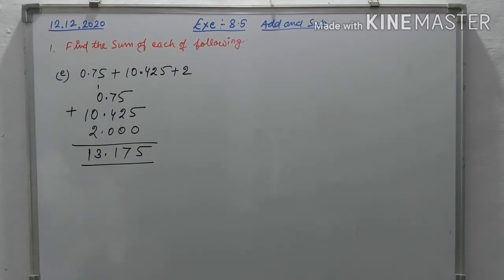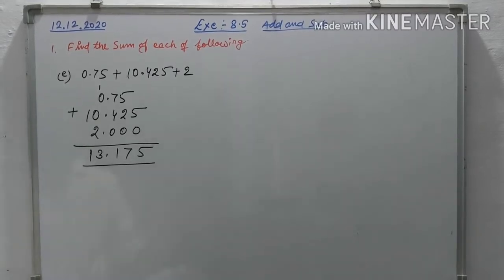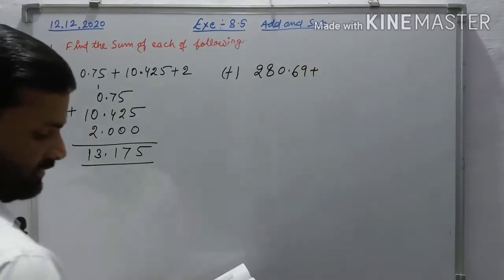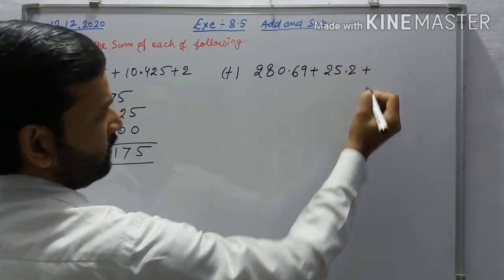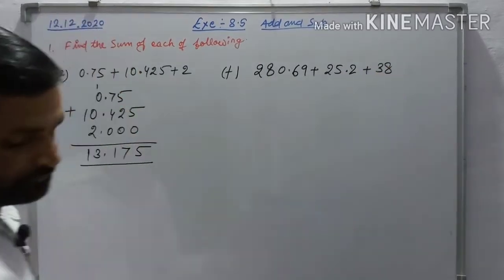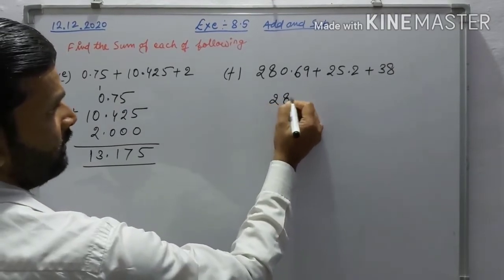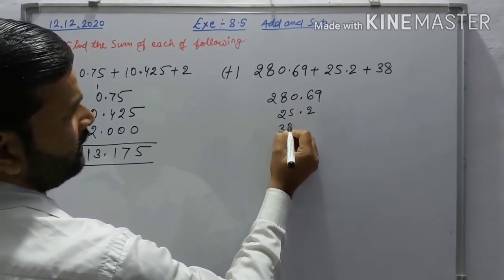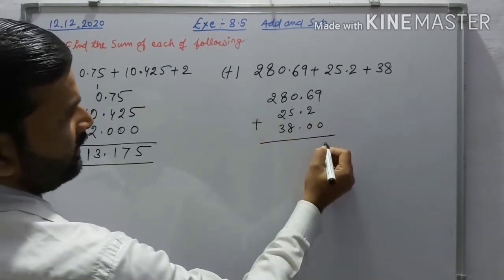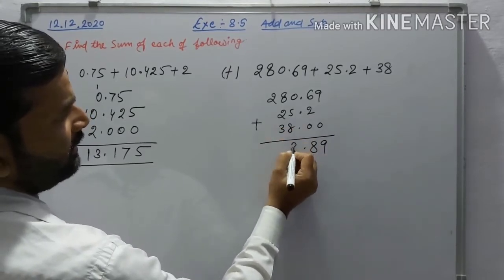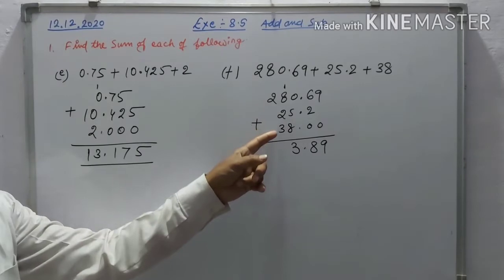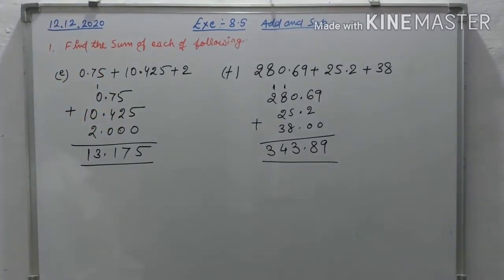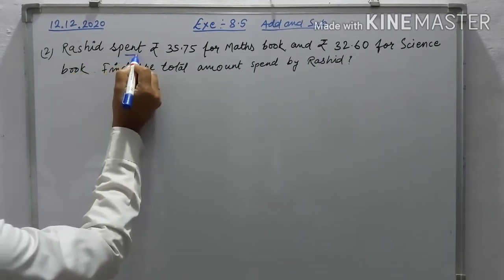The last question (f) is 280.69 plus 25.2 plus 38. Write 280.69, then 25.20, then 38.00 and add. 9, 6 to 8, 8, 5 — 13, carry 1 — 8 and 2 is 10, 3 is 13 — carry 1 — the answer is 343.89.